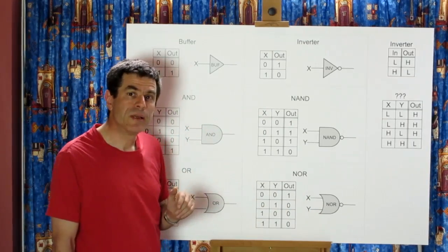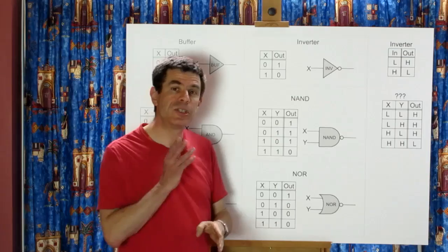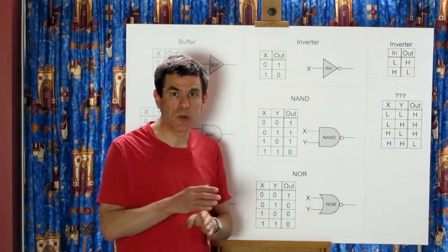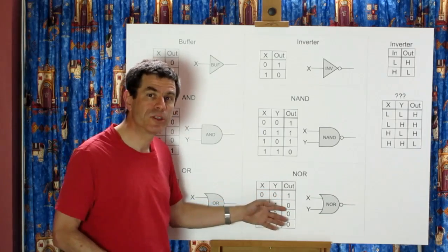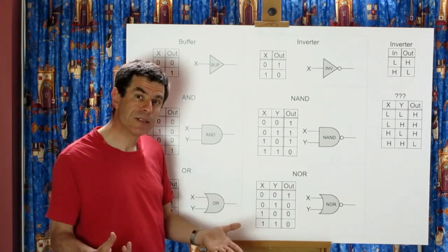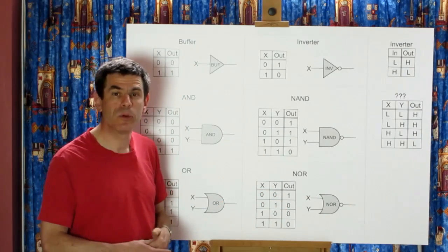Now, the other choice we made a while back was whether we arranged our transistors in series or in parallel. If we'd arranged them in parallel, we'd have created the NOR function. So we'll have a quick look at that and then we'll have done everything that can be done with two transistors.